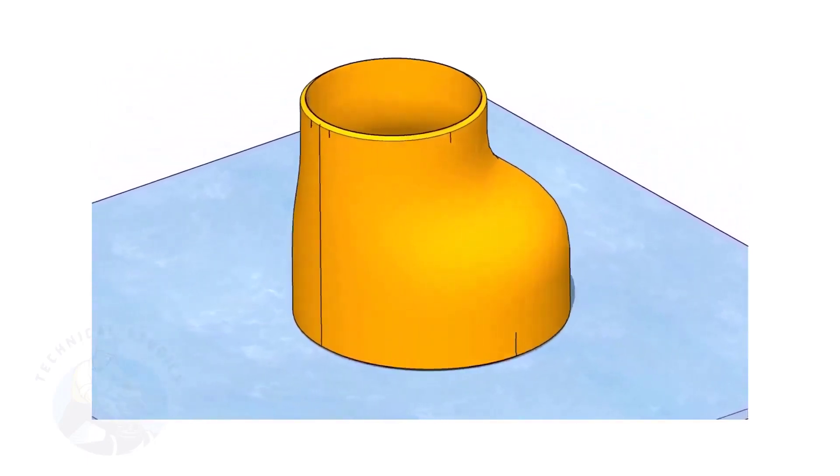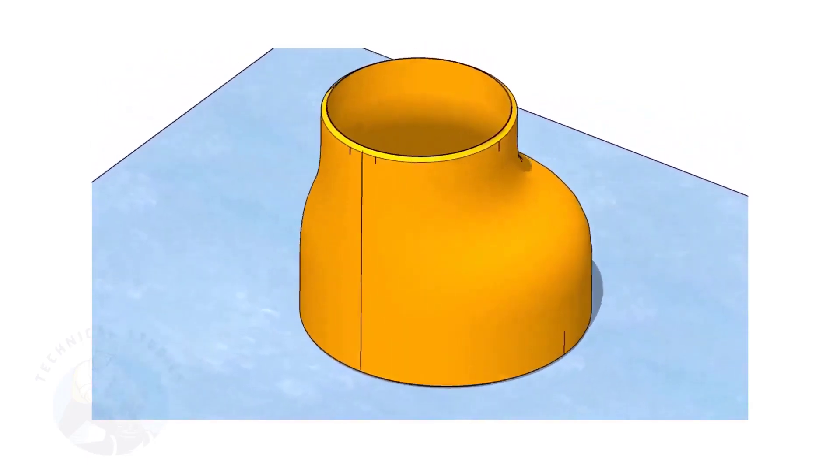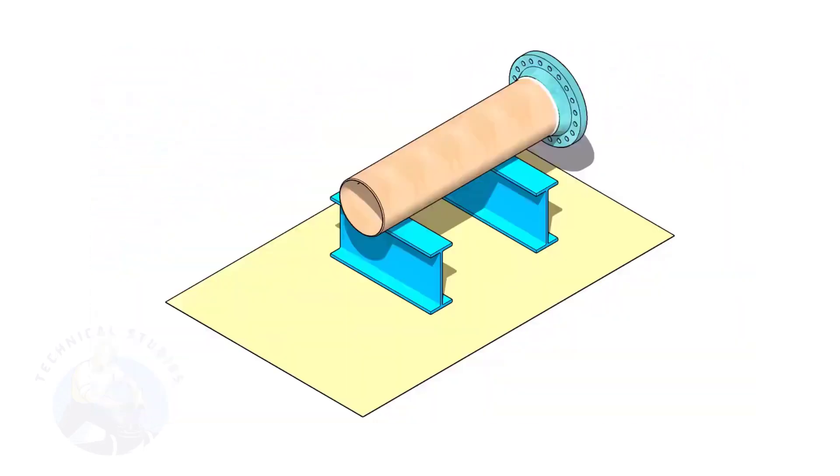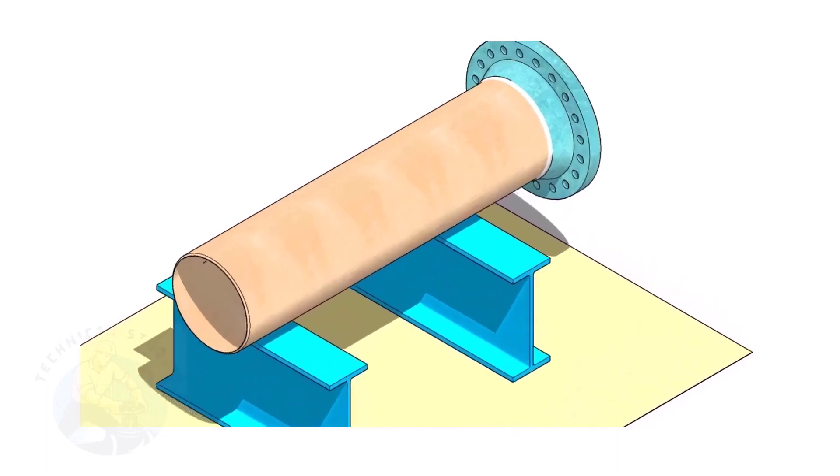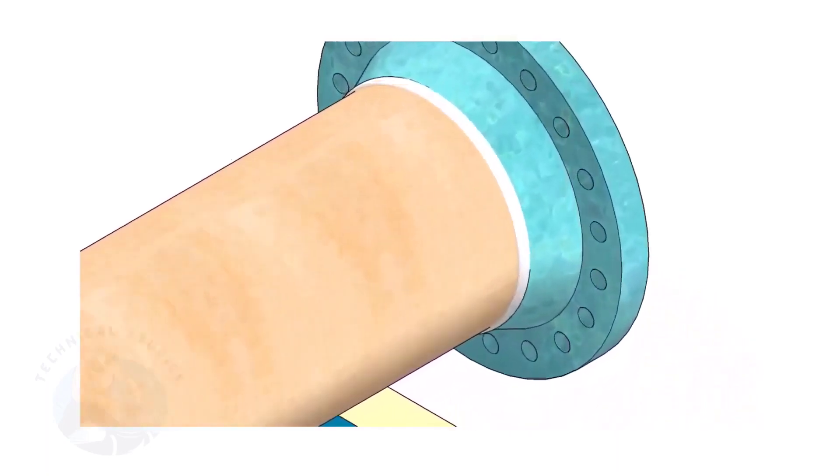Remember, the sequence of the fitup is more important. Assume that the flange is welded to the pipe. Put the spool on suitable supports.